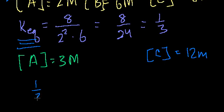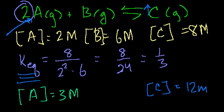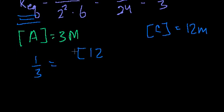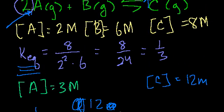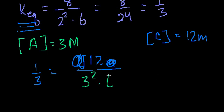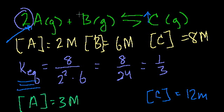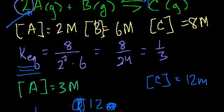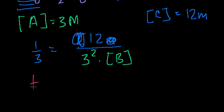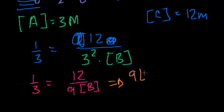So our equilibrium constant is now going to be equal to the concentration of C. So it's 12 molar, divided by our new concentration of A. That's 3. But remember the reaction, the coefficient on A is 2, so it's 3 squared, times the concentration, the new concentration for B. There's no coefficient here, so I don't have to worry about any exponents. And let's just solve this. So you get 1 third is equal to 12 over 9B. So if we just cross multiply, we get 9 times the concentration of B is equal to 3 times 12, which is 36. And so divide both sides by 9, the new concentration of B is 4, or 4 molar.